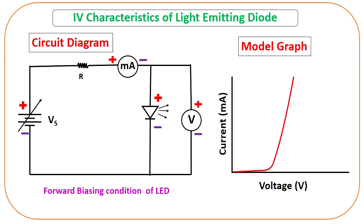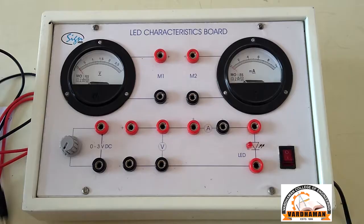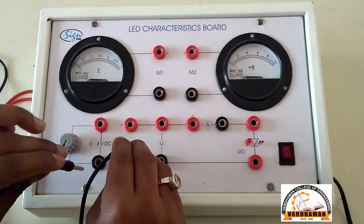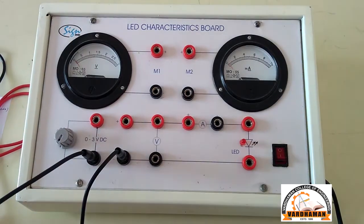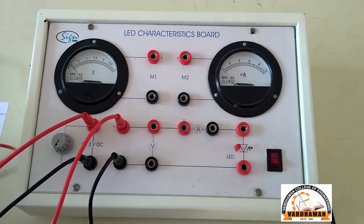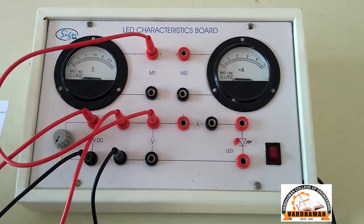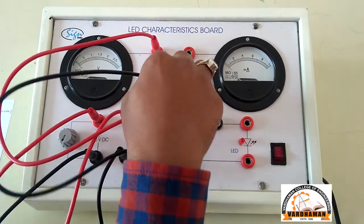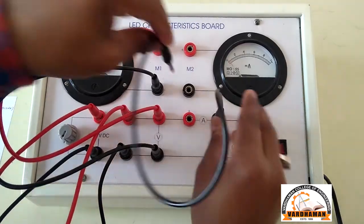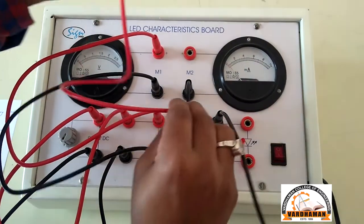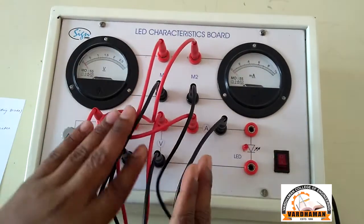Here you can see that it is connected in forward bias condition. The positive terminal is connected to the p-side and the negative to the n-side of the LED. Based on this diagram we will connect the wires — negative to the negative side and positive to the positive side. This is the DC power source. The positive side of the voltmeter is connected to the positive terminal and negative to negative. Similarly for the ammeter, negative to negative and positive to positive, and this is internally connected. This completes our circuit.